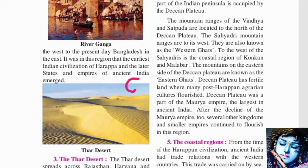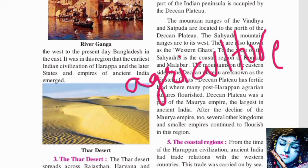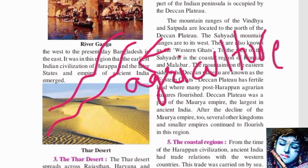The reason civilizations developed in this plains region is that earlier people were most dependent on agriculture. Agriculture is best near rivers, and this region is exactly that — the river-basin region. That is why Harappan civilization and ancient Indian states were found here.